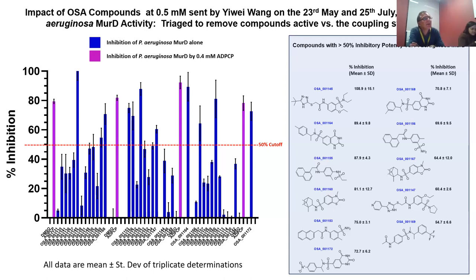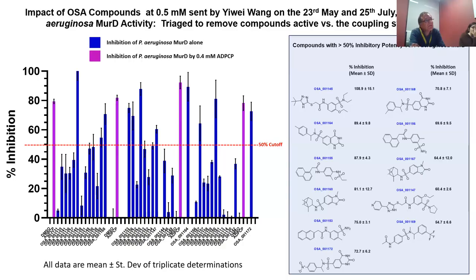Looking at the results, repeating structural motifs are visible across the active compounds, suggesting a series of some description may be emerging with respect to MurD. The team then went on to screen MurE as well. The assay details are included in the data, partly because someone may need them for a thesis.